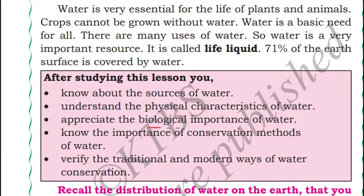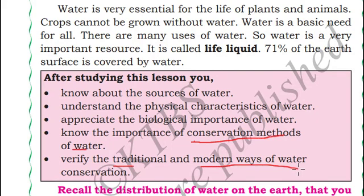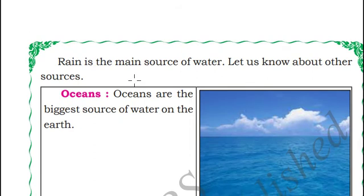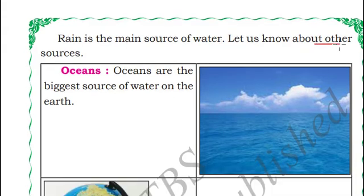We will also know the biological importance of water, conservation methods of water, and traditional and modern ways of conserving water. Rain is one of the major sources of water. Here, we are referring to water as pure water which is consumable or drinkable. Now let us see about other sources of water. Oceans are the biggest source of water on the Earth's surface.